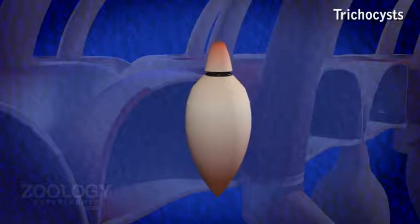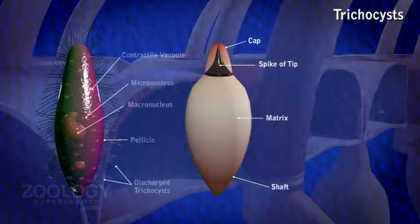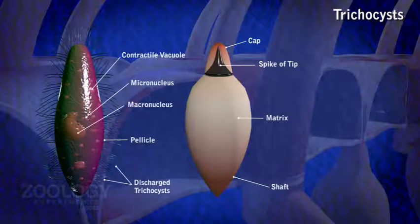covered by a cap. It is believed that these discharge and anchor the animal to a firm substratum when it feeds upon bacteria. They are also believed to be organelles of defense.